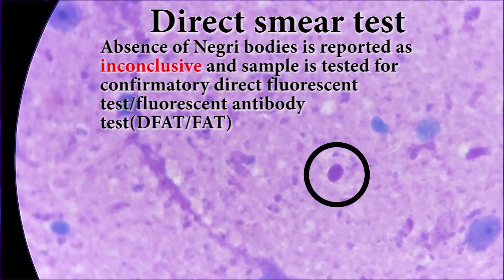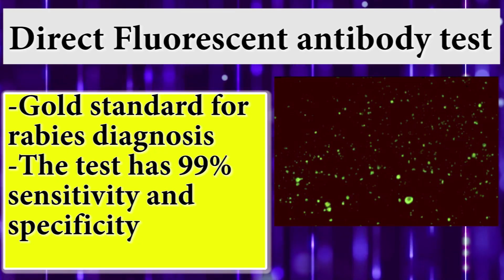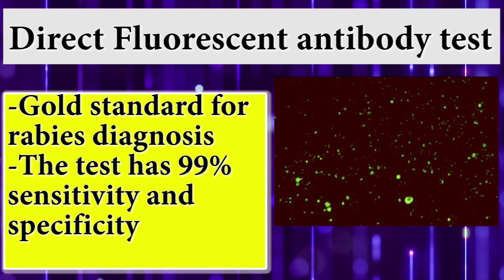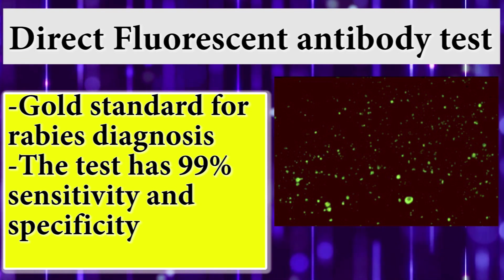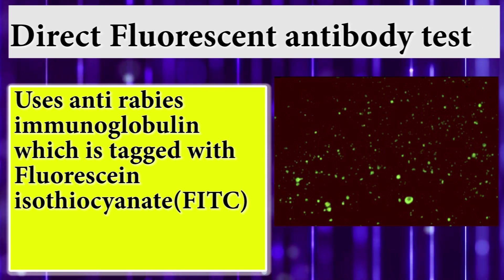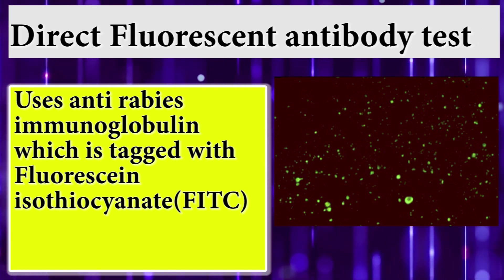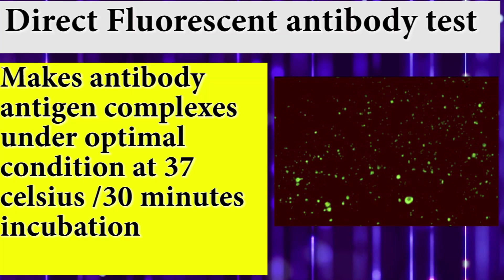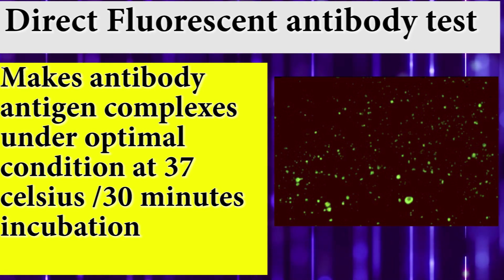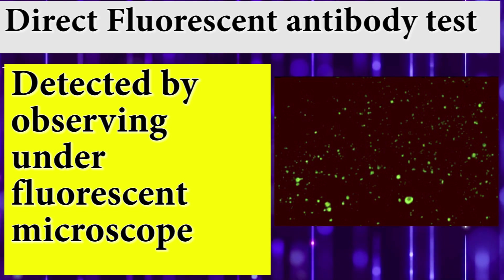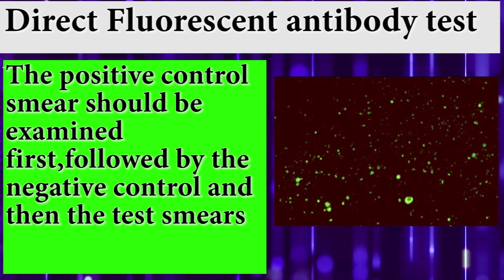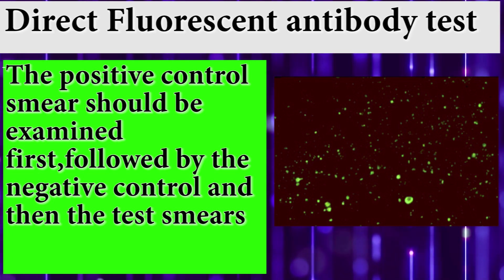When we talk about the direct fluorescent antibody test, it is the gold standard for rabies diagnosis. The test has 99% sensitivity and specificity. It uses anti-rabies immunoglobulin stained with fluorescein isothiocyanate, which makes antibody-antigen complexes under optimal conditions at 37°C with 30 minutes incubation. Results are detected by observing under a fluorescent microscope. The positive control smear should be examined first, followed by the negative control, and then the test smear.